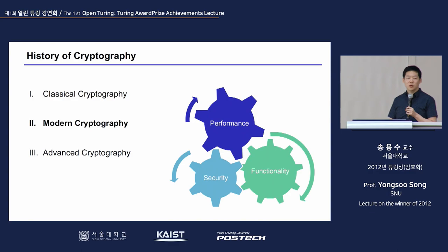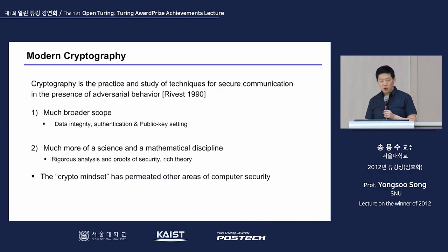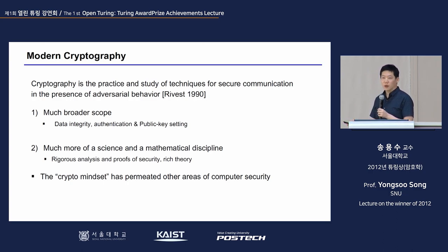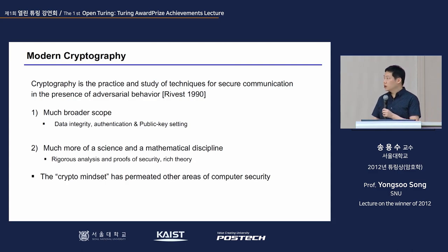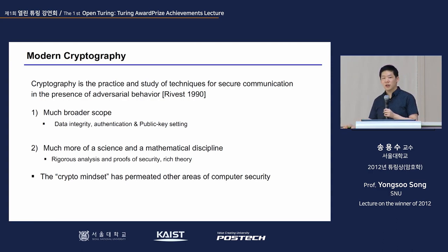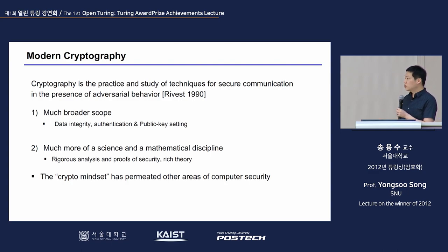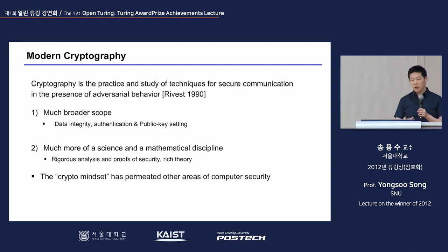Up to here, cryptography stayed in the area of art, but from modern cryptography onward it moves toward science. Rivest defined cryptography as the practice and study of technologies for secure communication in the presence of adversarial behavior. Compared to the past, it covers a much broader scope — not just private security, but data integrity, authentication, and safely moving data in public key settings. The tools used were more rigorously analyzed and the theory became much richer.